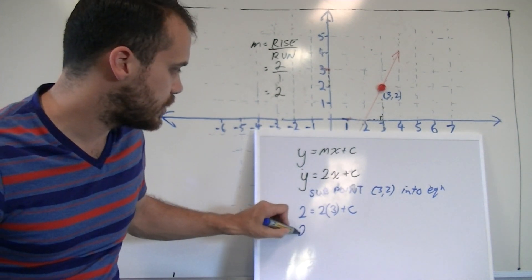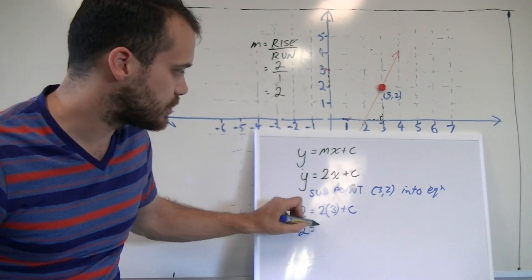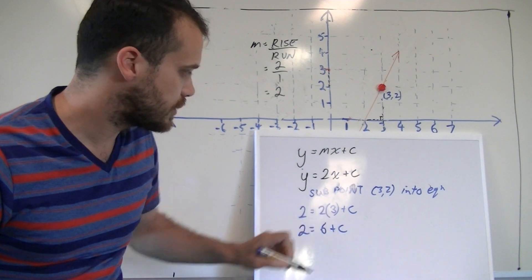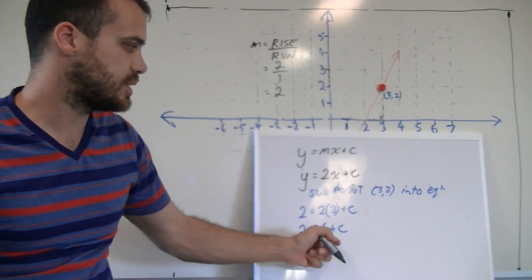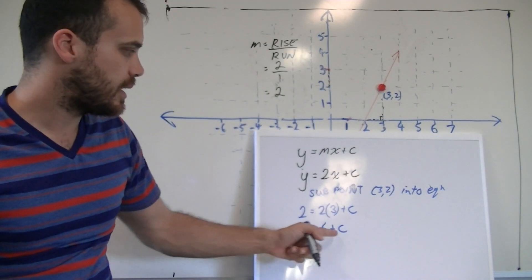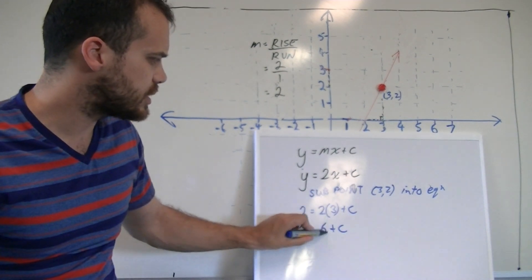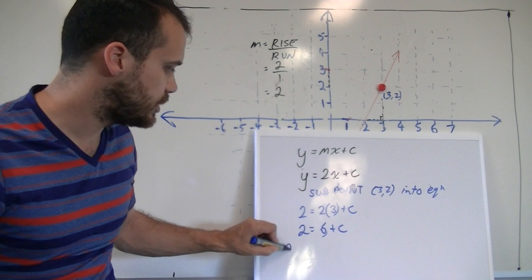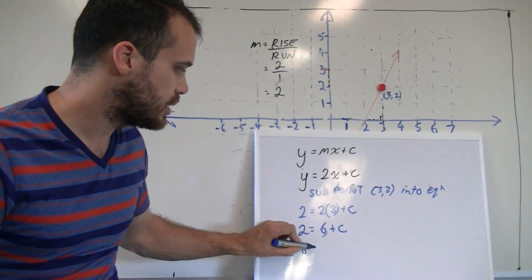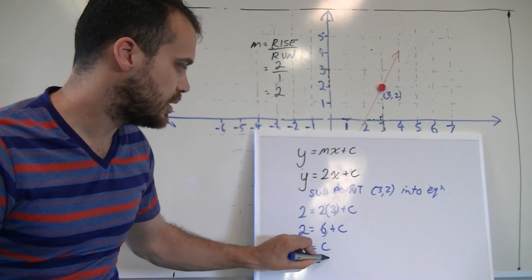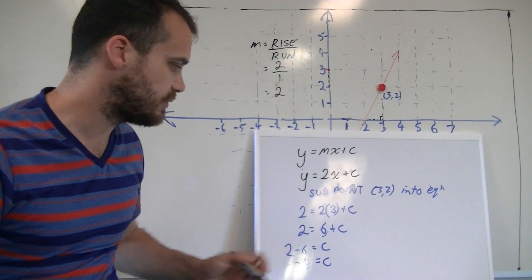Now if we work with this a little bit, 2 times 3 is 6. 2 equals 6 plus c. Now we want to isolate c, we'd like to know what c is. We can take that positive 6 and move it to the other side. 2 minus 6 equals c. So c equals negative 4.